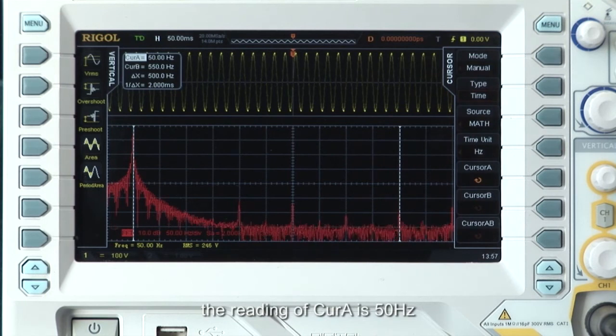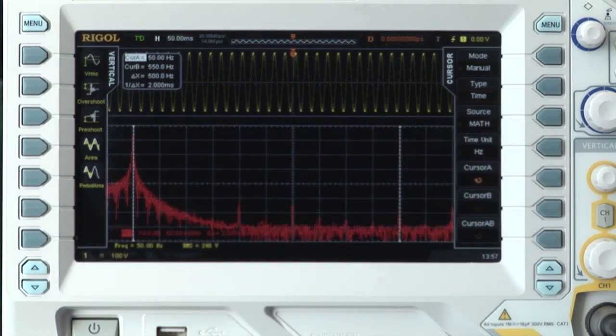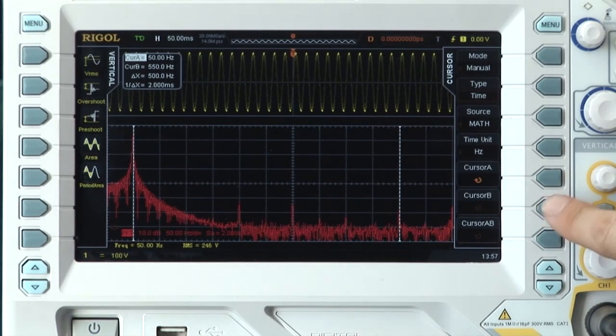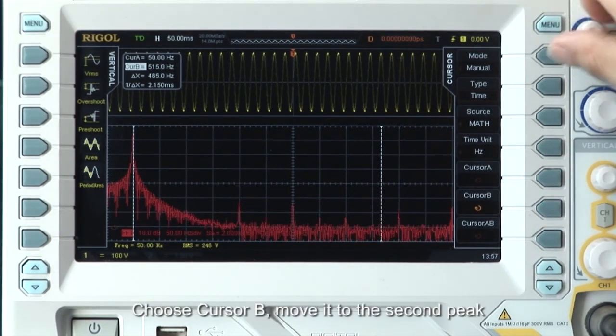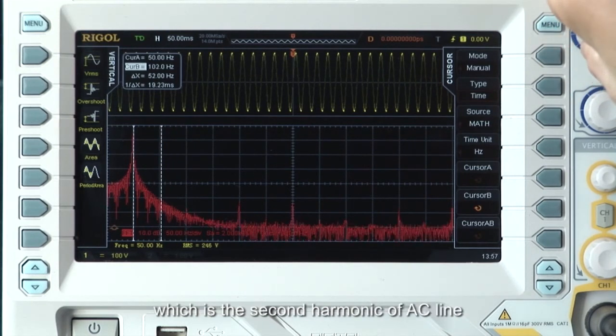The reading of cursor A is 50 hertz, the fundamental frequency of the AC line. Choose cursor B, move it to the second peak, and the reading of cursor B is 100 hertz, which is the second harmonic of the AC line.